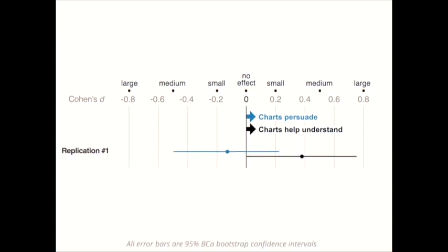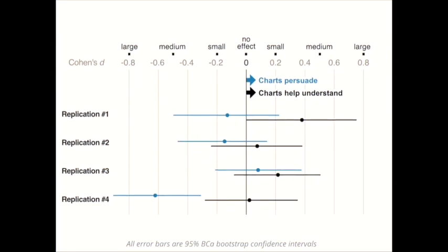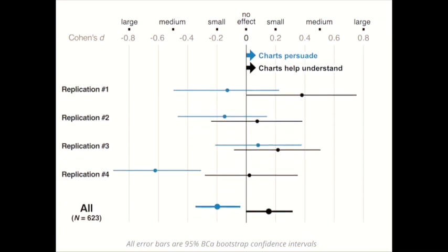So here we have the results from our first replication. The blue confidence interval is the effect on persuasion. We can see that it's unclear, maybe even possibly negative. Whereas the black one is the effect on comprehension. As we already saw, it's slightly positive. Here are the results for our remaining replications, including the surprisingly large negative effect of the chart on persuasion in our last replication. And here are the effects for all replications combined. So we can see that the effects are not very impressive. They're quite small. But still, it's quite clear that the chart had a more positive effect on comprehension than on persuasion overall across all our experiments.